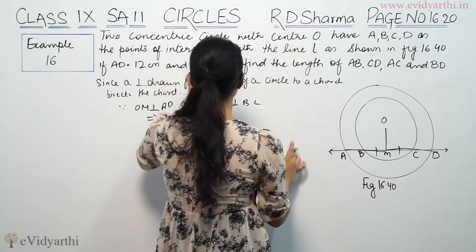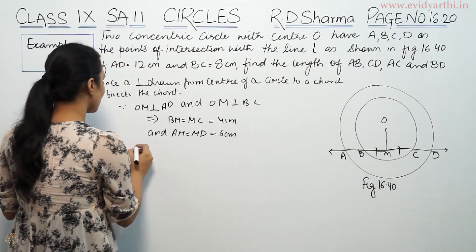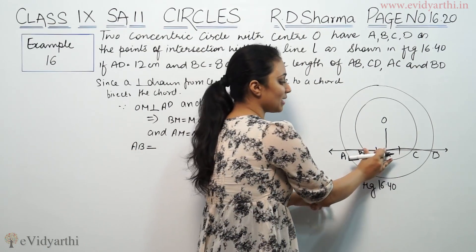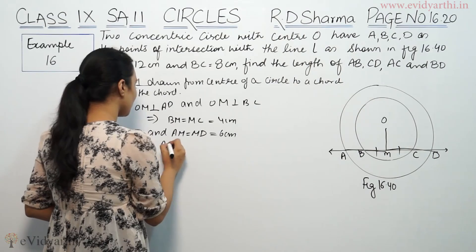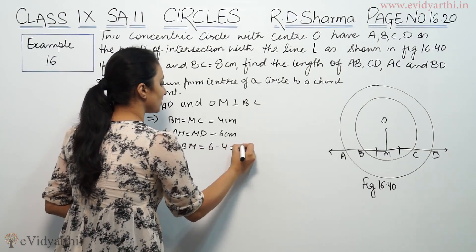BM is equal to 4 cm. We will find length AB. If we use AM minus BM, AM is 6 and BM is 4. That means 2 cm.